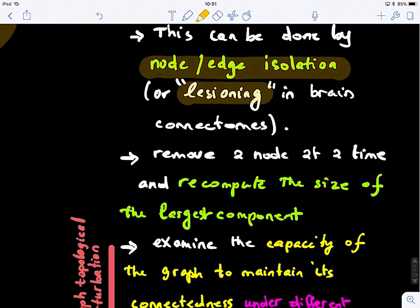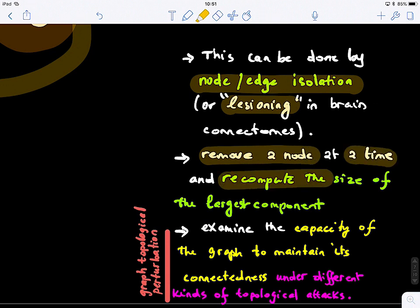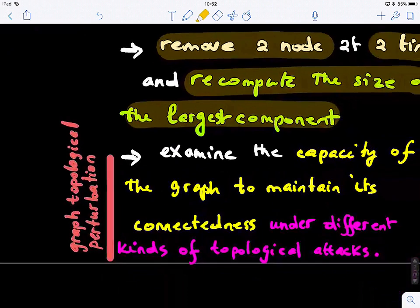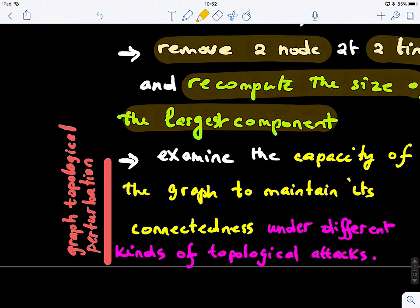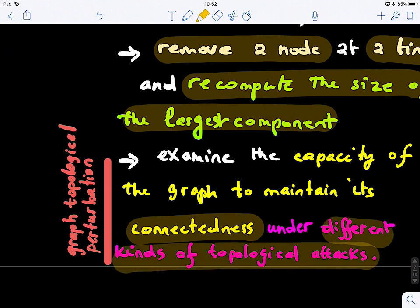So how do we generally evaluate this? We remove a node at a time and recompute the size of the largest component. So we want our network or graph to be integral, not to get fragmented at a large extent. So we do this randomly one at a time. And this basically allows us to examine the capacity of the graph to maintain its connectedness under different kinds of topological attacks.